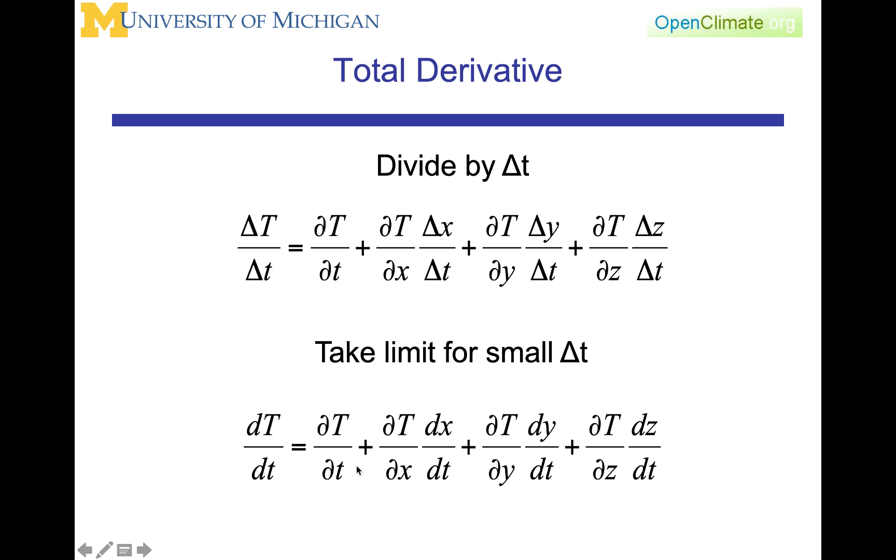Then what we get is this equation that the total change per unit time of temperature is equal to the partial derivative of T per unit time plus the change that is associated with the spatial variability. So here is dT/dx, the variability in the x direction, dT/dy, the variability in the y direction, dT/dz, the variability in the z direction.